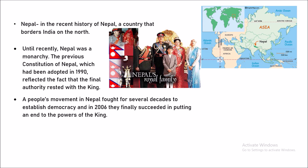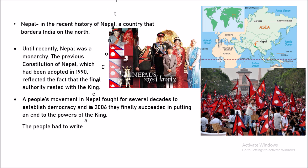The people had to write a new constitution to establish Nepal as a democracy. Nepal is located on the northern border of India. Until 1990, Nepal used to have a monarchy form of government — ruled by kings or the royal families. The previous constitution of Nepal, adopted in 1990, reflected the fact that the king is the final authority of the entire country. People moved as a movement and fought for several decades to establish democracy, and in 2006 finally succeeded in putting an end to the powers of the king.